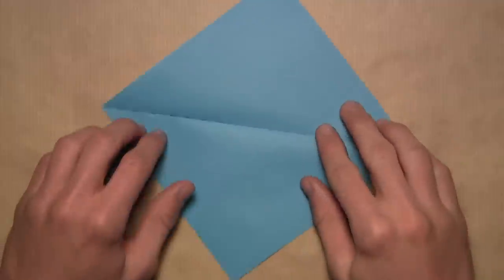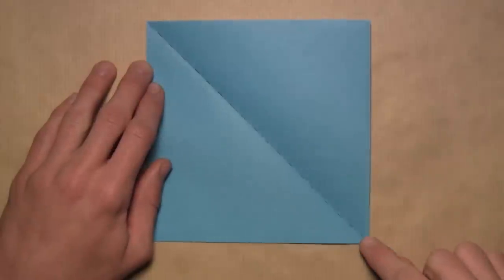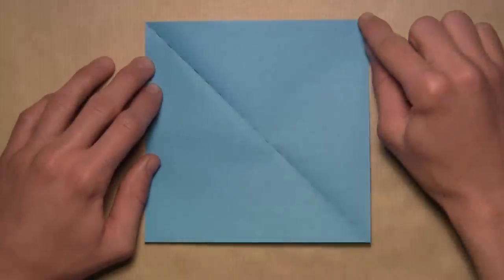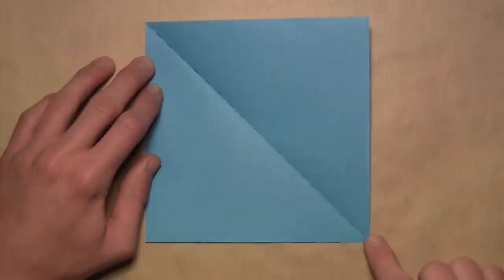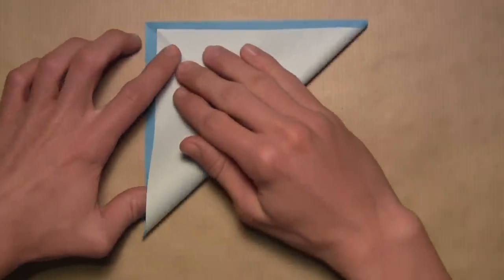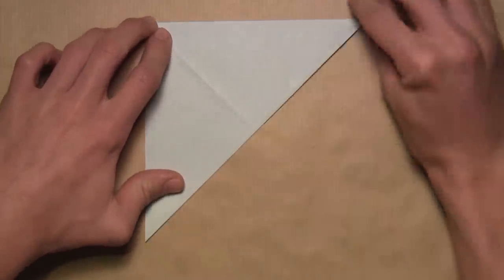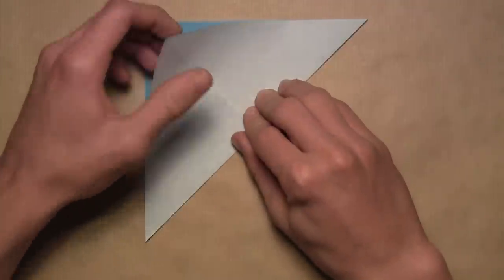Now we're going to rotate the paper so that the crease we just made now runs from the top left corner down to the bottom right corner. And now we're going to create a diagonal crease in the opposite direction. So once again, we're going to take this bottom right corner and fold it up to the top left corner. Align the corners and the edges, then make your crease, and then unfold.